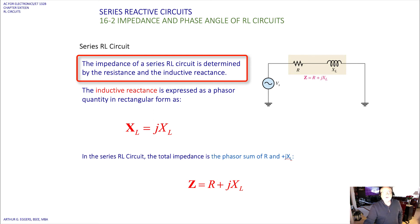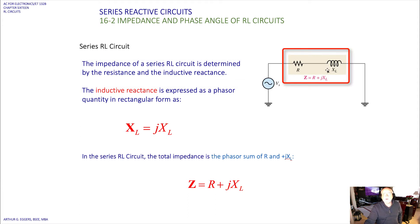We need to build our relationships and understand mathematically and conceptually how we build RL series reactive circuits. The series RL circuit, with one resistor and one inductor in series, forms the phasor impedance relationship Z equals R plus JXL.